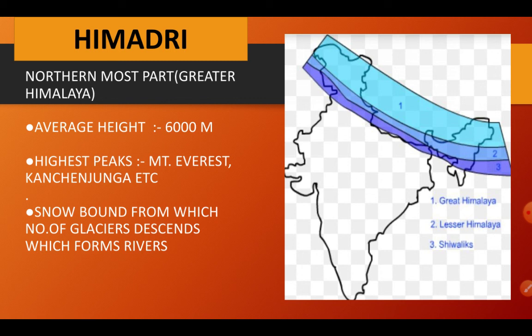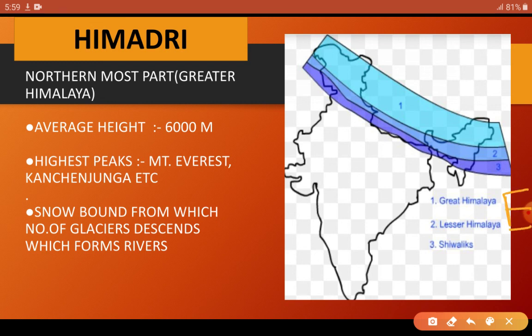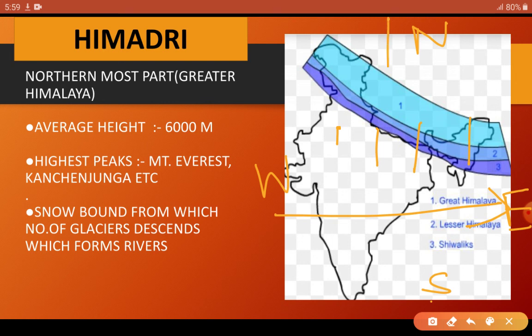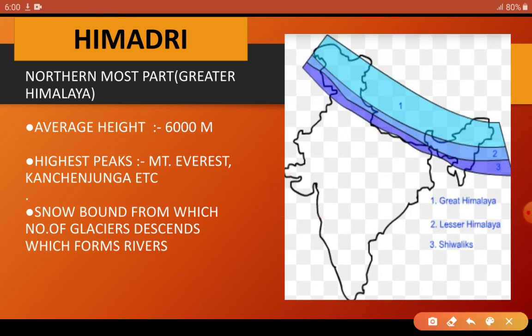The second division is from north to south. We divide the Himalayas into three categories: first is the Great Himalaya, second is the Lesser Himalaya, and third is the Siwalik.